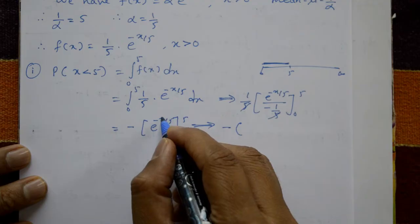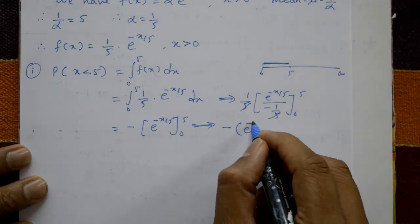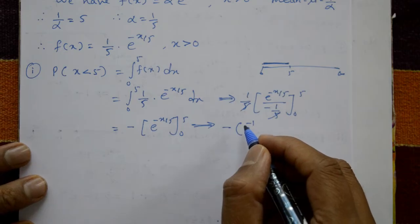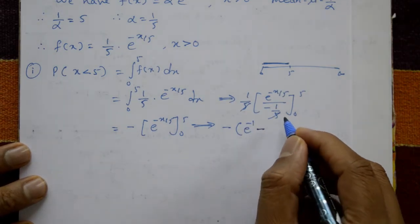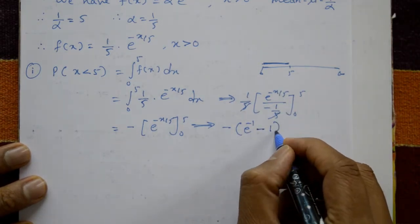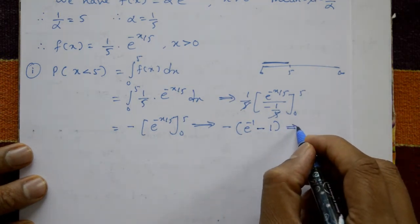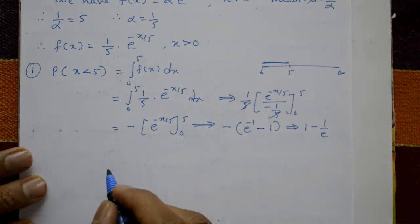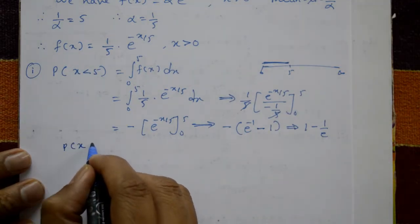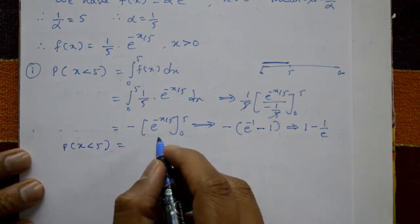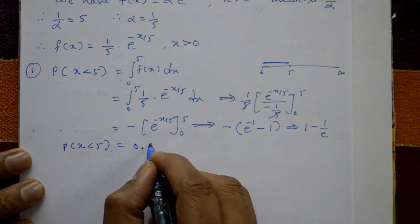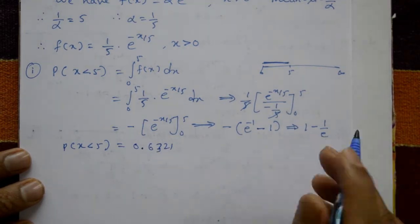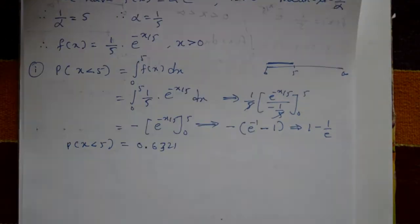Applying the upper limit: 5/5 = 1, so we get e^(−1). Then minus the lower limit: e^0 = 1. This simplifies to 1 − 1/e. Therefore, P(X < 5) = 0.6321.